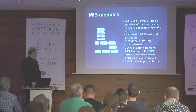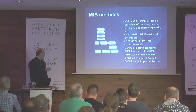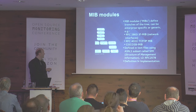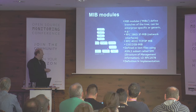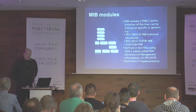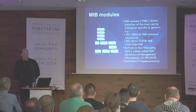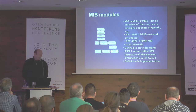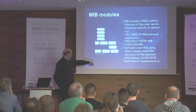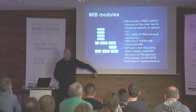Here's an example of a tree, ripped off Wikipedia. We have the nameless root, and in this example we have an ISO branch, org, DOD — the Department of Defense — and so on. This is where we have enterprise-specific branches. So-called MIB modules define branches of this tree. Those can be generic, for example the IF MIB for network interfaces or the TCP/IP MIB, or they can be enterprise-specific.